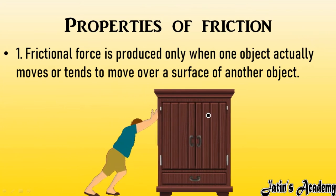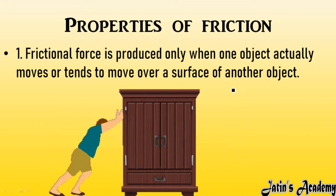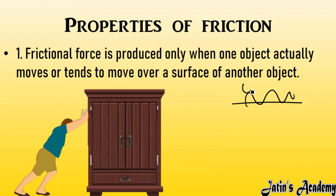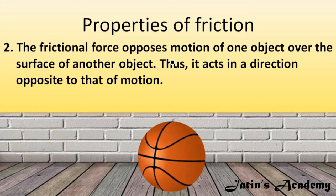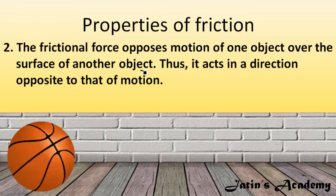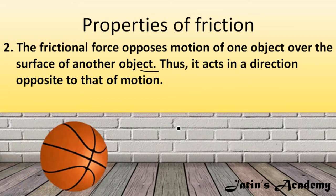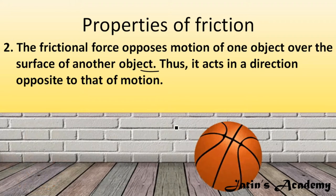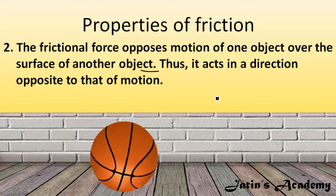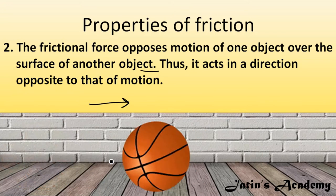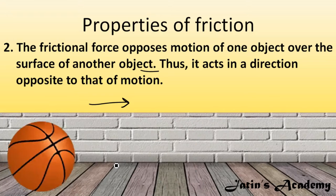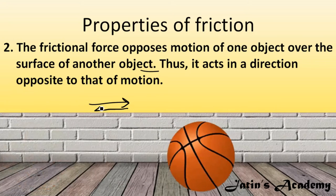Now the properties of friction. First property: frictional force is produced only when an object actually moves or tends to move over the surface of another object — only then will interlocking be possible, and only then will friction exist. Second property: frictional force always opposes the motion of one object over the surface of another, always acting in the opposite direction to the motion.